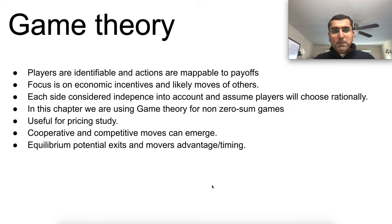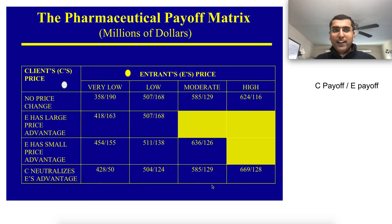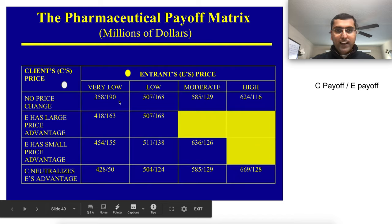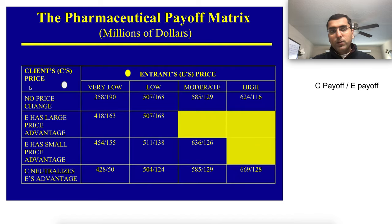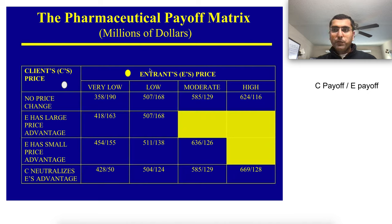Game theory applies when players are identifiable and actions are mappable to payoffs. Let's take an example: your client's company on one side, and an entrant E trying to compete with you, say in the pharmaceutical business. You first create a payoff matrix — essentially mapping out all the variants that the competition, the entrant E, will take in terms of launching a new product at various price points: very low, low, moderate, and high price.